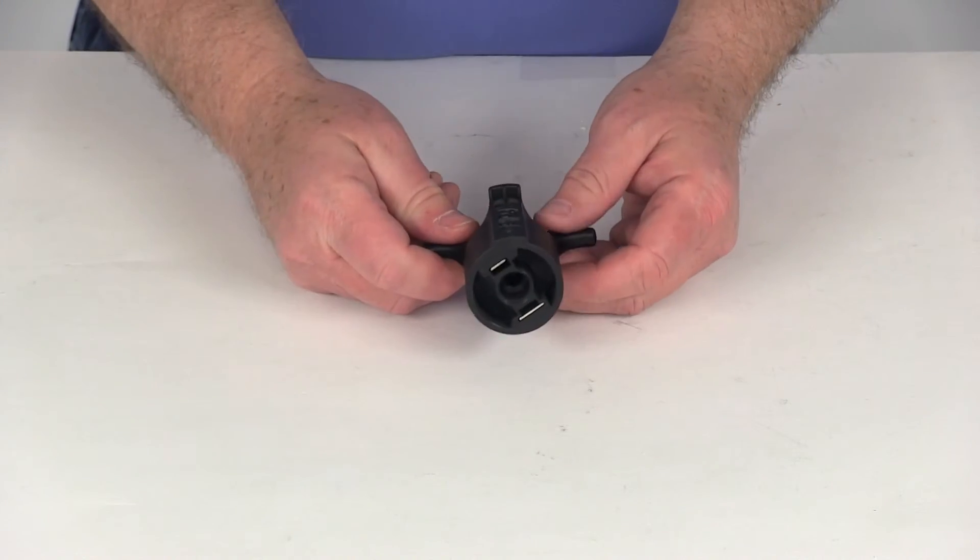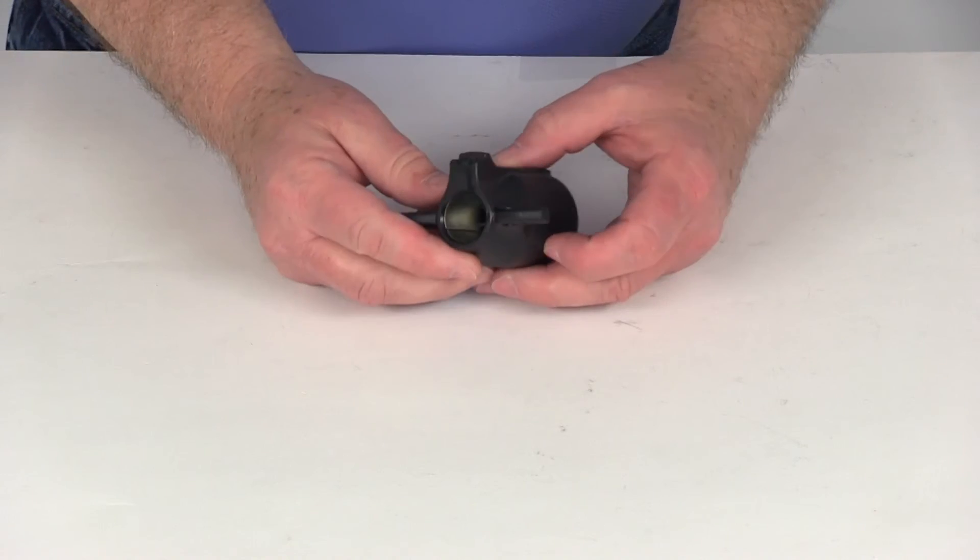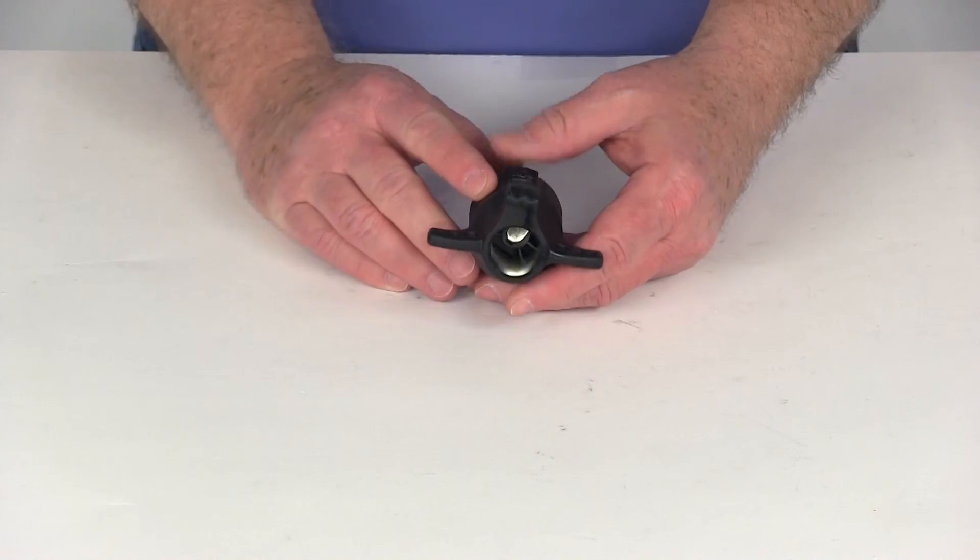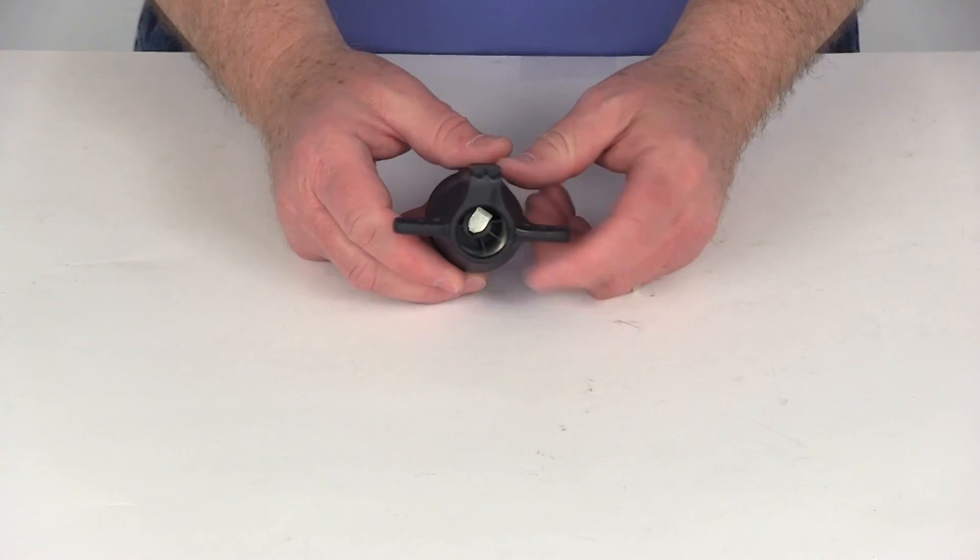That should do it for the review on part number PK-11896, the Pawlik 7-Way to 12-Volt power outlet adapter.